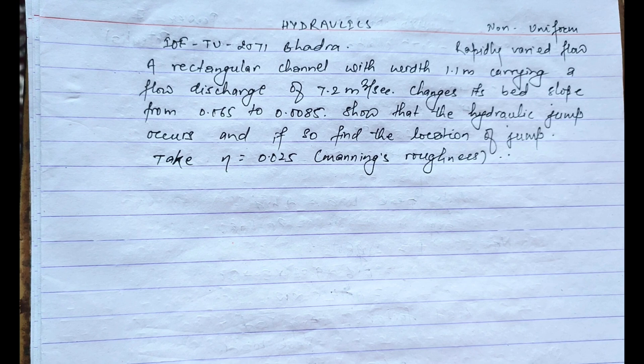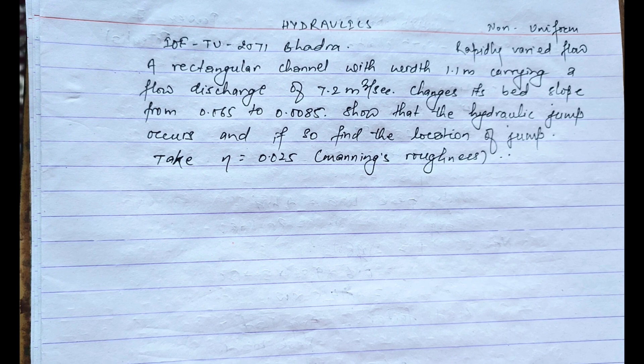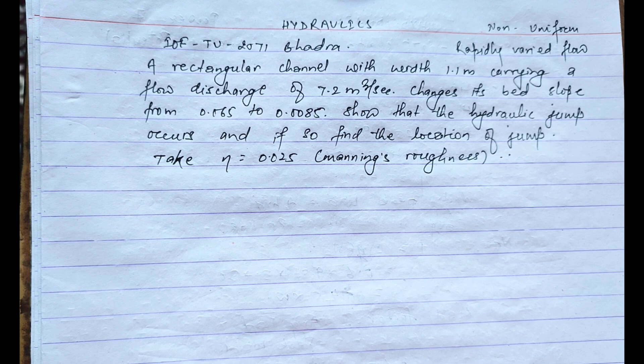Hello everyone, welcome to our channel. Today we are going to solve a numerical problem related to non-uniform rapidly varied flow. The given question is: a rectangular channel with width 1.1 meter carrying a flow discharge of 7.2 meter cube per second changes its bed slope from 0.065 to 0.0085.